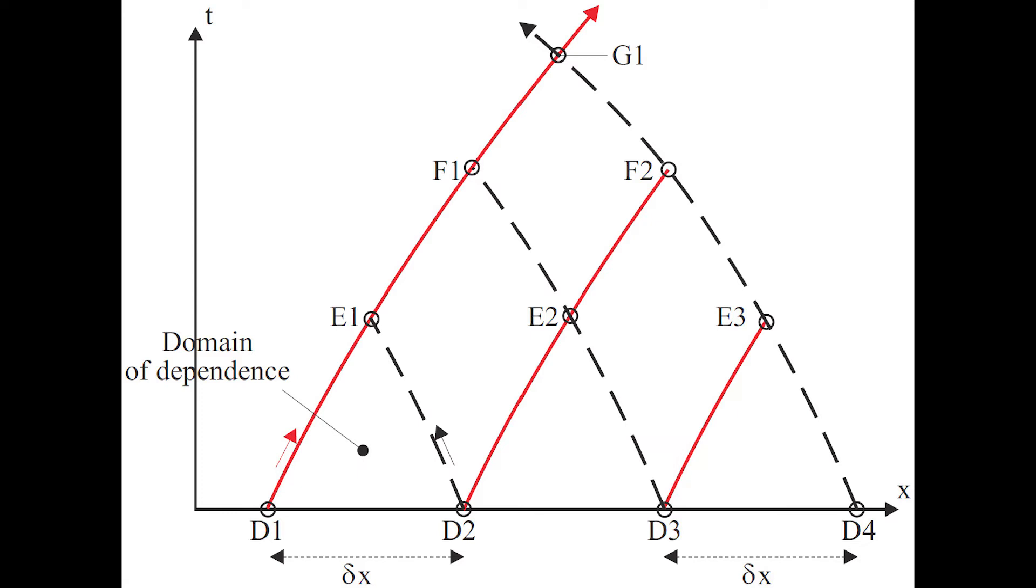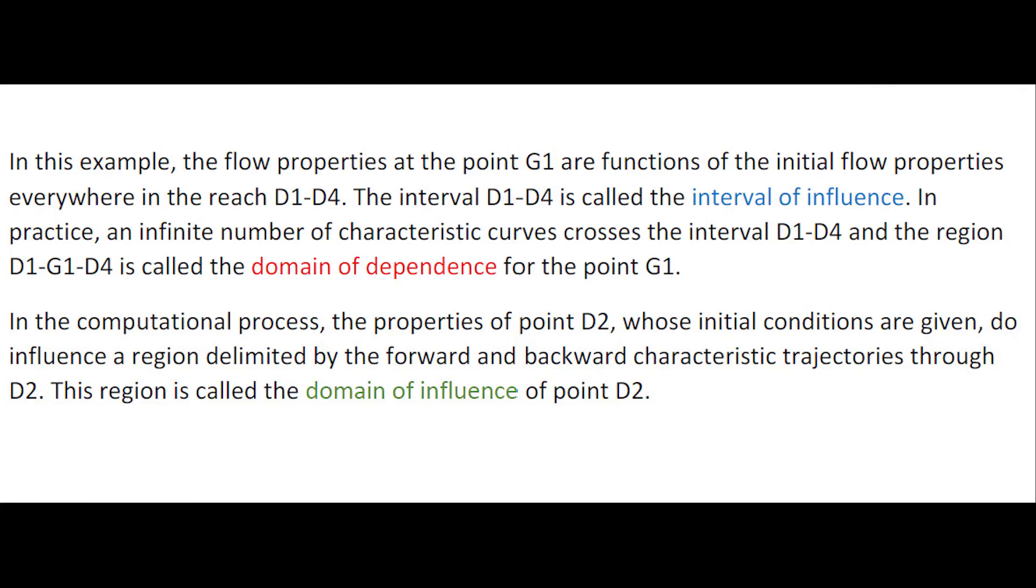For this example, the flow properties at point g1 are a function of the initial properties everywhere in the interval d1 to d4. This interval d1 to d4 is called the interval of influence.